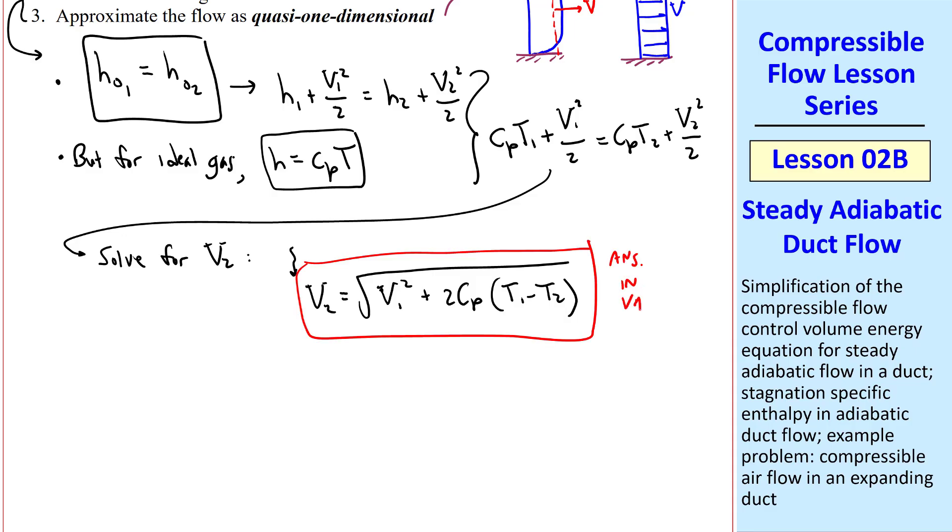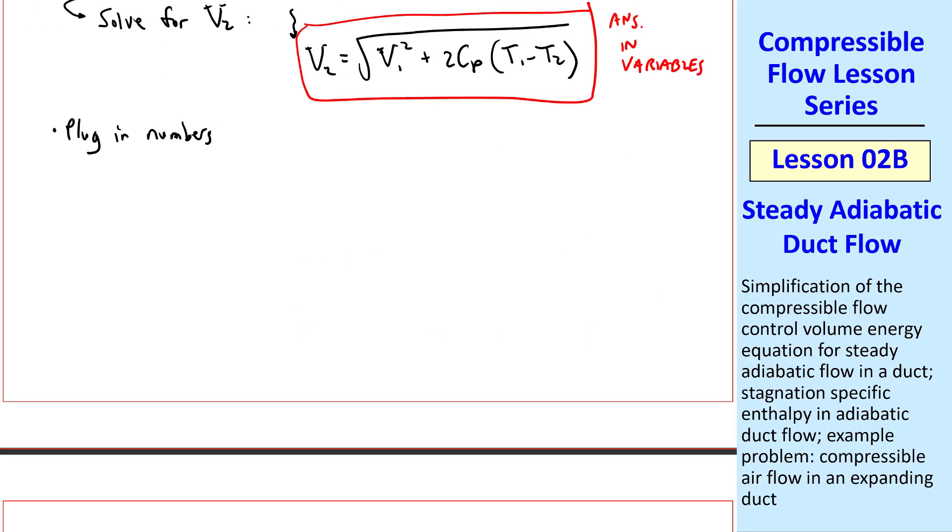This is our answer in variables. Now we plug in the numbers. V1 was given, and CP for air is known, and the two temperatures are also given. The Ks cancel.